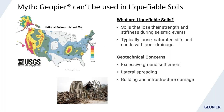We frequently hear that GeoPeer can't be used for liquefiable soils — soils that lose their strength and stiffness during an earthquake, typically loose granular soils with poor drainage below the water table. Concerns include excessive ground settlement, lateral spread, and massive building and infrastructure damage. The map shows seismically active U.S. zones — the west coast, New Madrid in Missouri/Arkansas, South Carolina, and Alaska — and a photo shows the Christchurch Cathedral in New Zealand after a major earthquake event.